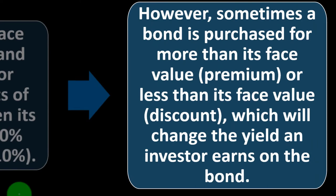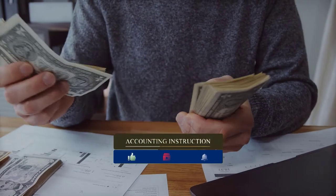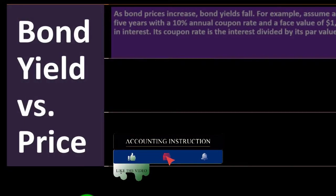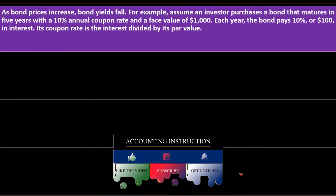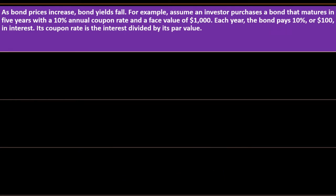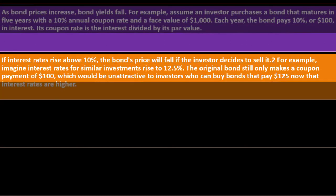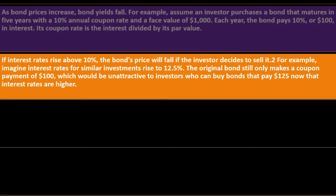Sometimes a bond is purchased for more than its face value (premium) or less than its face value (discount), which changes the yield an investor earns. This often happens when buying on the secondary market. As bond prices increase, bond yields fall. For example, assume an investor purchased a bond maturing in five years with a 10% annual coupon rate and a face value of $1,000 — paying $100 in interest per year. If interest rates rise above 10%, the bond's price will fall if the investor decides to sell it.